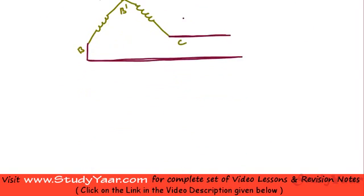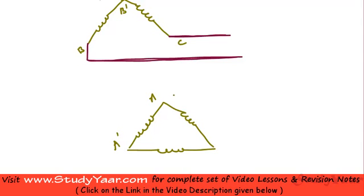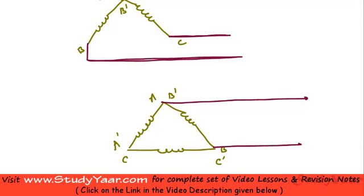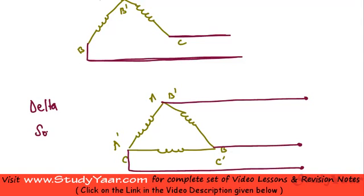In a delta connection, all the coils are connected in a closed loop. You have your A dash A, your B dash B, and your C dash C — the three coils connected in a closed loop. You connect your transmission lines from the junction points, and your power is delivered through those transmission lines. This is your delta connection, essentially a delta source.